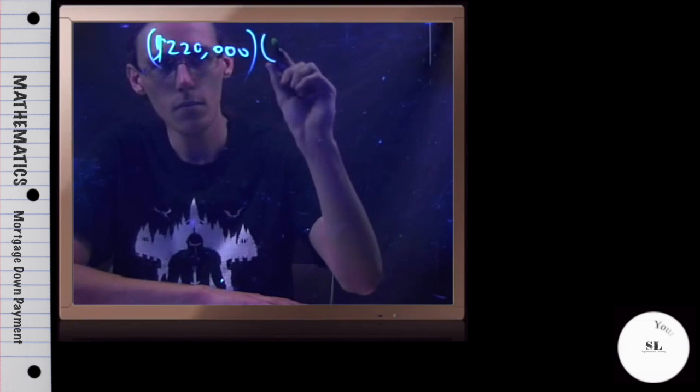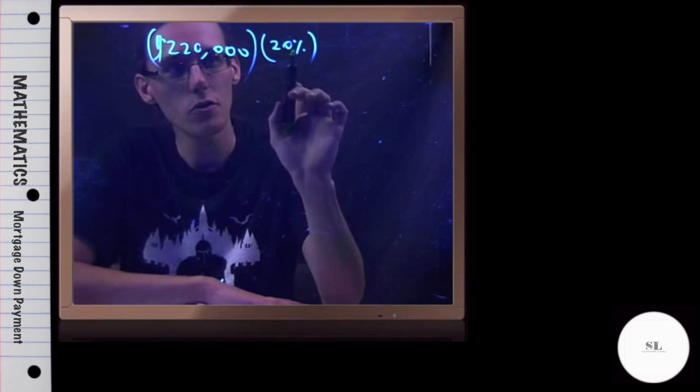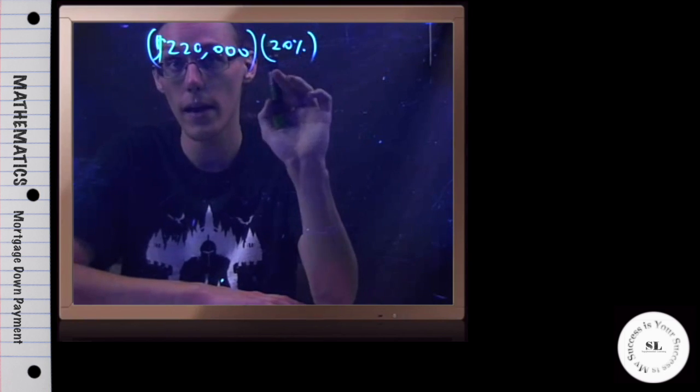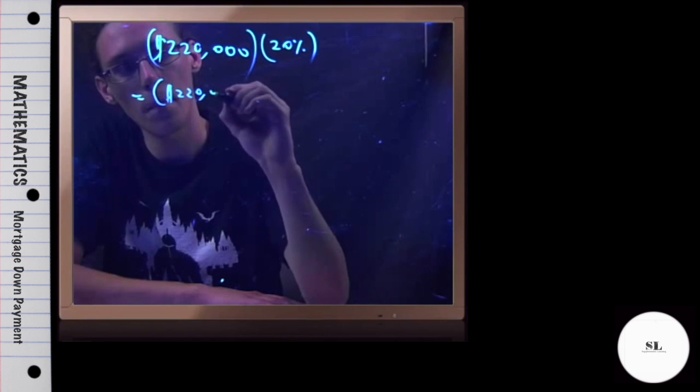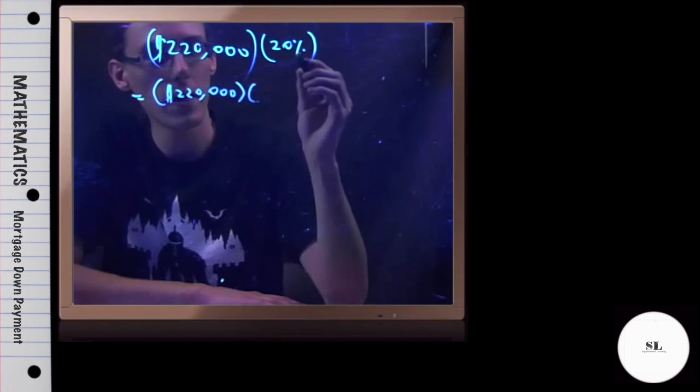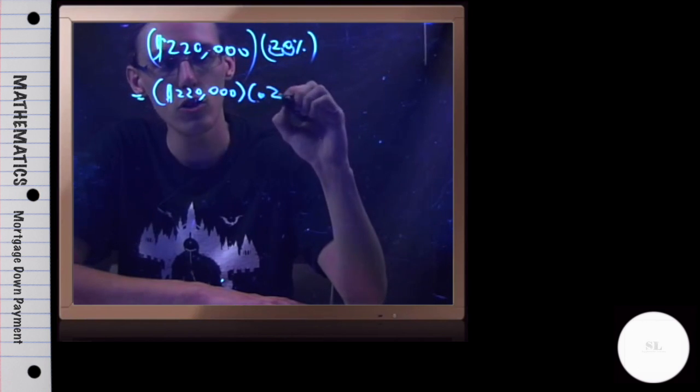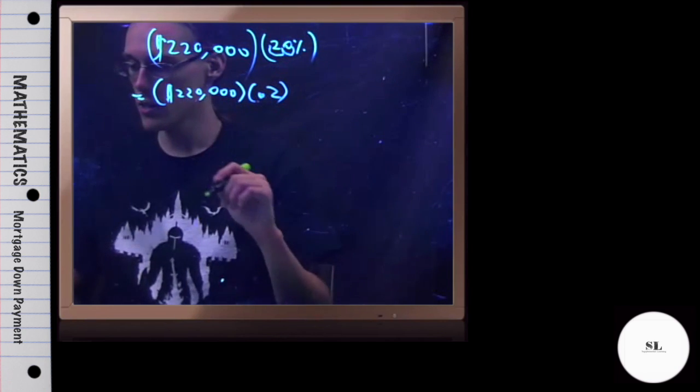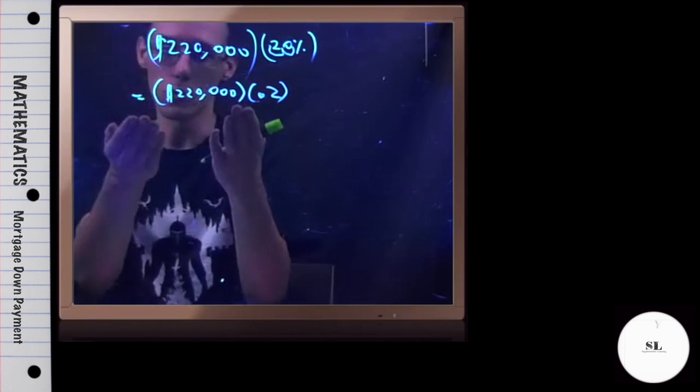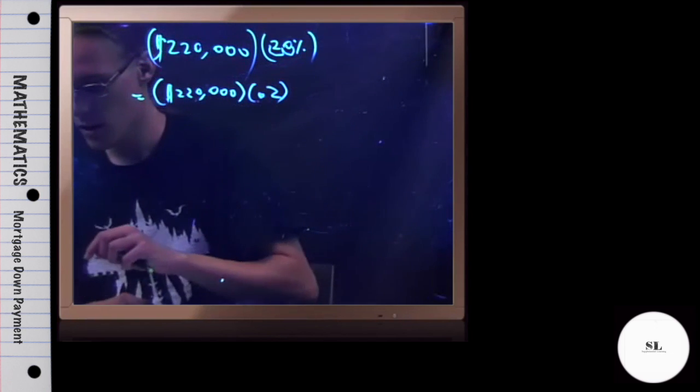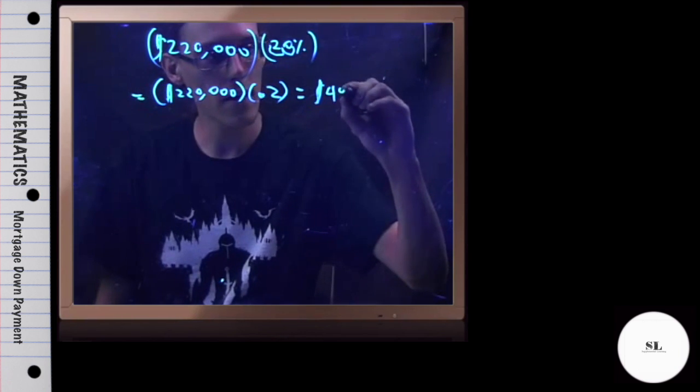So I'm going to be multiplying this by 20%. But hold up, whenever you use a percentage in any arithmetic, you actually have to convert it back to a decimal. So I have $220,000. This 20%, if the decimal is right here, I'm going to hop it to the left twice, and we get 0.2. So I'll just chuck this in the calculator right quick. 0.2 times 220,000, or 220,000 times 0.2, is $44,000.